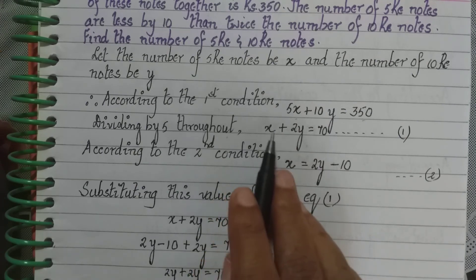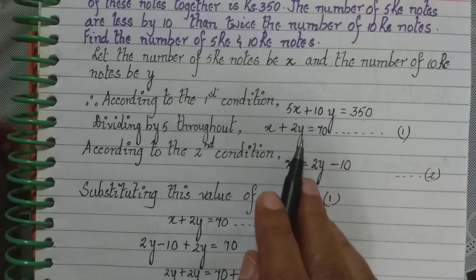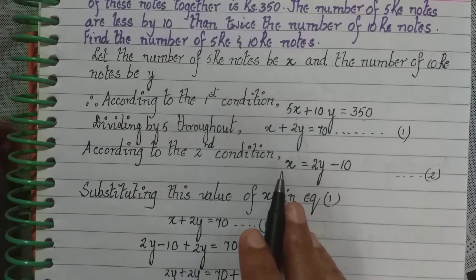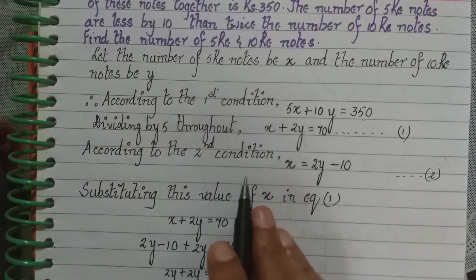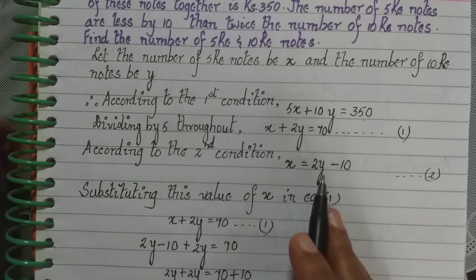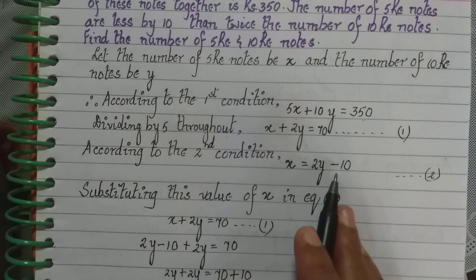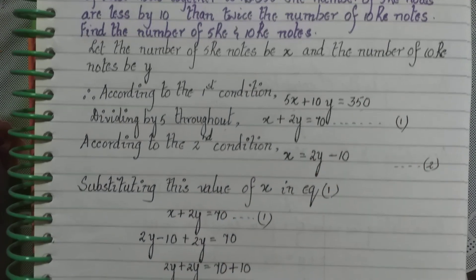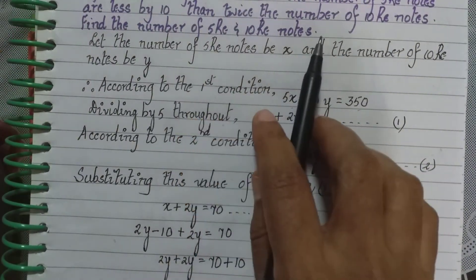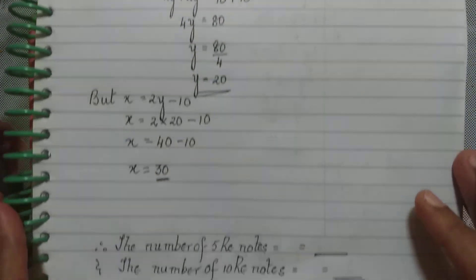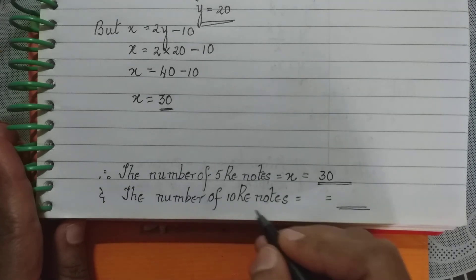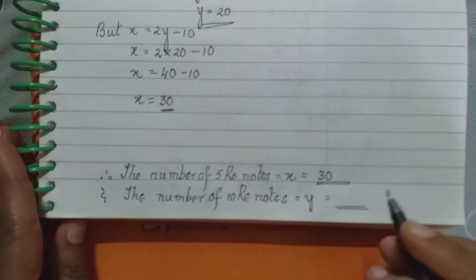For Equation 1: 30 + 2 × 20 = 30 + 40 = 70. Yes, it satisfies. For Equation 2: left-hand side is 30; right-hand side is 2 × 20 − 10 = 40 − 10 = 30. Both sides equal 30, so it satisfies too. Therefore, the number of 5 rupee notes is X = 30, and the number of 10 rupee notes is Y = 20.